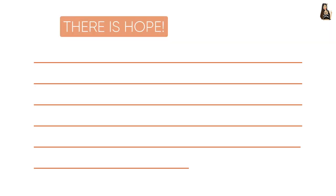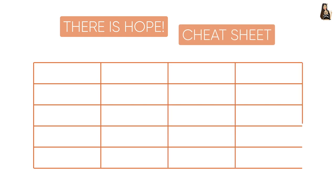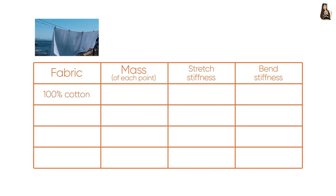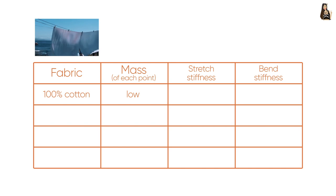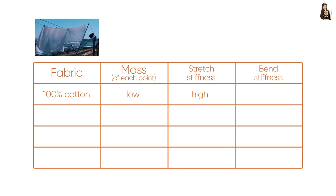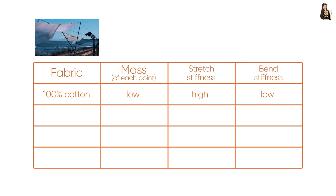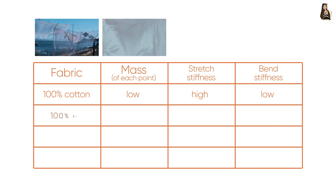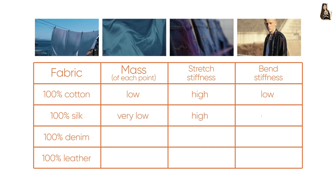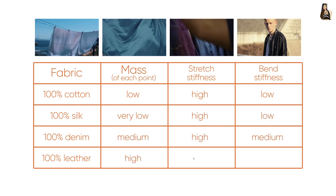What we can do, however, is observe and analyze different fabric types and make a cheat sheet presenting how the properties compare. For example, fabric made out of 100% cotton will have quite low mass per point on the geometry, will have high stretch stiffness so it will not stretch easily, but it will have low bend stiffness so it will create quite large folds. We can do the same for silk, denim, leather, and any other fabric type, even for mixed fabrics.